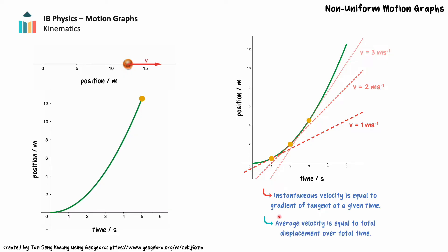Average velocity represents the overall motion of an object over a given time interval and is calculated using total displacement and total time. Graphically, the average velocity can be calculated by determining the gradient of a line connecting the initial position and the final position over a time interval. For the basketball, we can see that over the first 5 seconds of motion, the average velocity is 2.5 m per second.